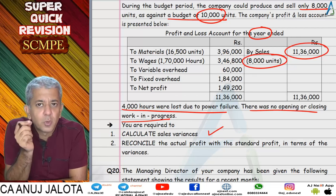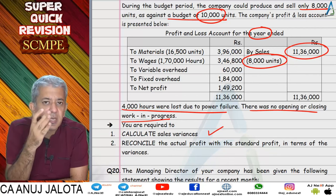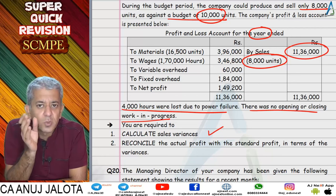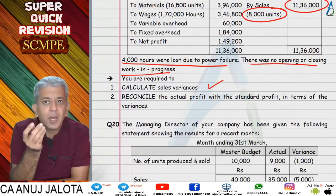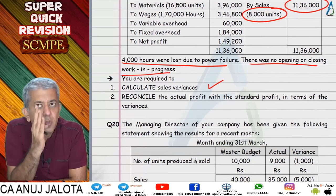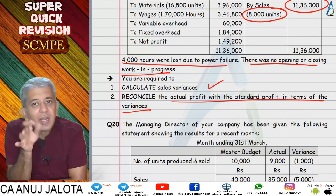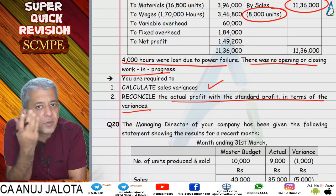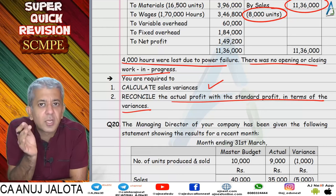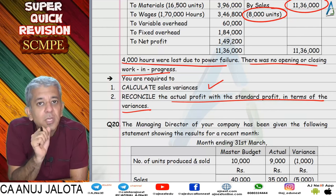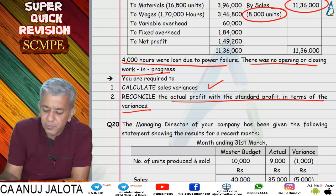There are three possible total sales value variances broken into selling price and sales volume. Sales volume breaks into sales mix and sales quantity; sales quantity breaks into sales market size and sales market share. Here mix won't appear since there's only one product, so volume and quantity are the same. Market size/share data wasn't given. We also had to do a reconciliation between actual and standard profit, so profit variances were needed.